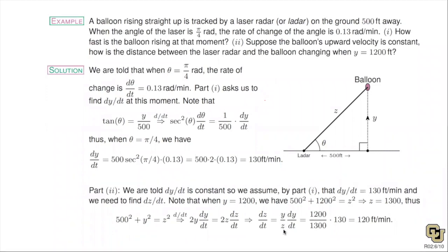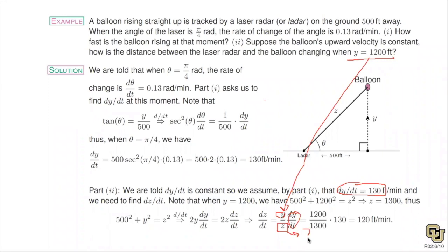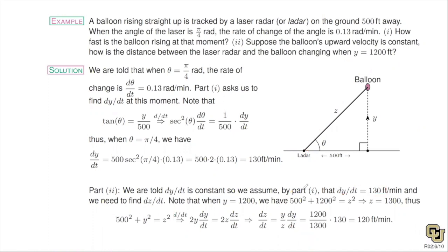To find z, I go back to the Pythagorean theorem with no calculus — just algebra. Replacing y with 1200: 500² + 1200² = z². This turns out to be the 5-12-13 Pythagorean triple: 500² + 1200² = 1300². So z = 1300. Plugging all numbers in and doing the math gives the final answer. The key is: catalog the information, find a formula, take the derivative, and solve.